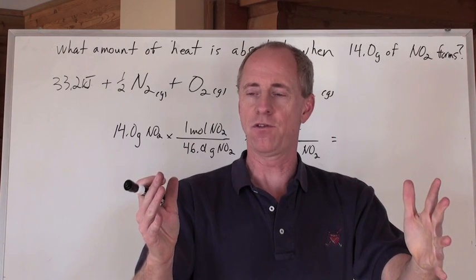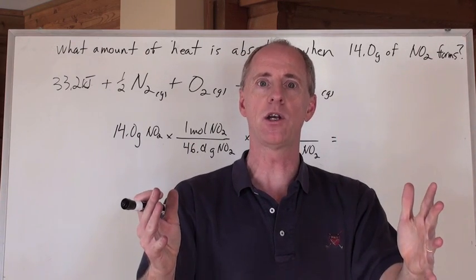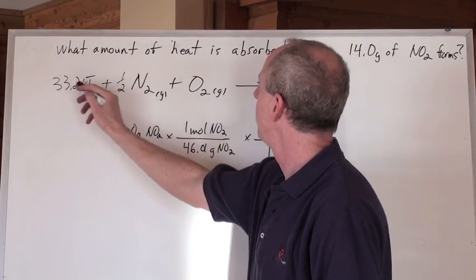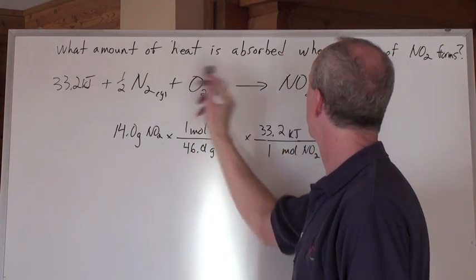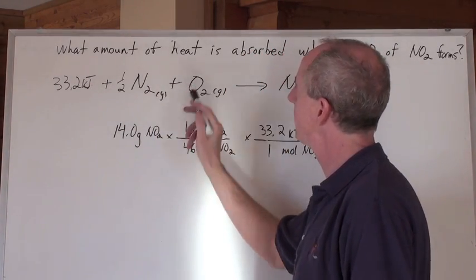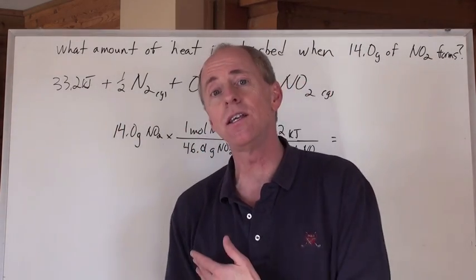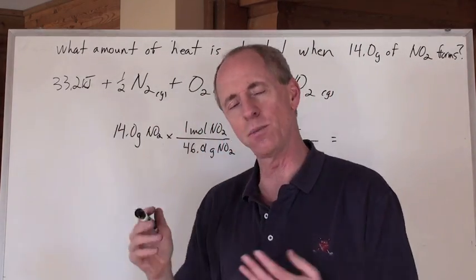And the key's going to be, it says here, forms from its elements. So you say to yourself, hey, if something forms from its elements, I'm going to write an equation that's going to represent the molar heat of formation of that. So again, here is that equation that represents the heat of formation of NO2 from its elements. And there is that delta H value written in the equation as 33.2 kilojoules.